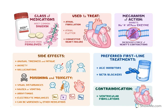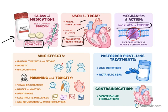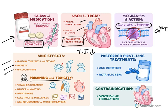Digoxin is most commonly used. The sources are Digitalis purpurea and Digitalis lanata (foxglove). It is used to treat atrial fibrillation, atrial flutter, and congestive heart failure. The major side effects include unusual tiredness, fatigue, anxiety, and hallucinations. Poisoning also occurs because digitalis has a very low therapeutic index. Other effects include visual disturbances, nausea, vomiting, arrhythmia, and electrolyte imbalance involving sodium, potassium, calcium, and magnesium, which can be worsened by other medications.